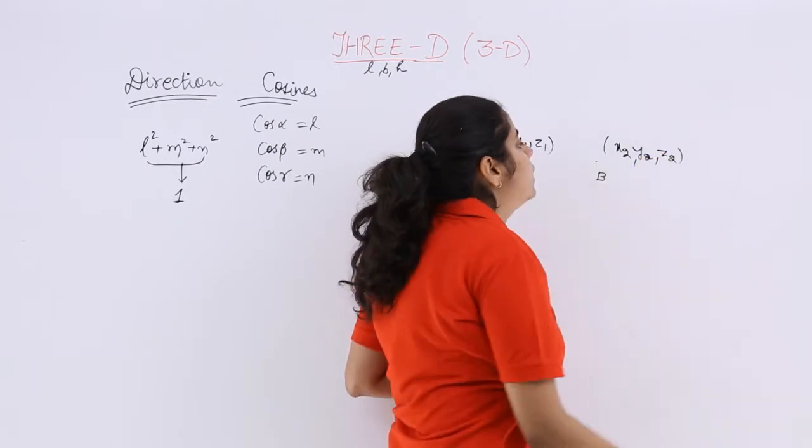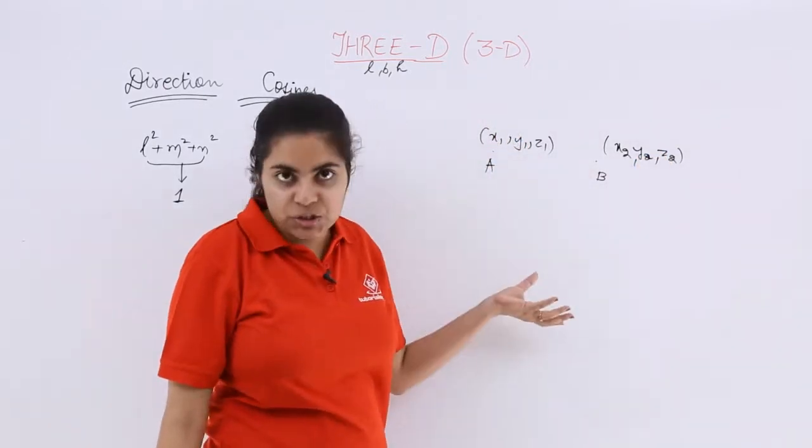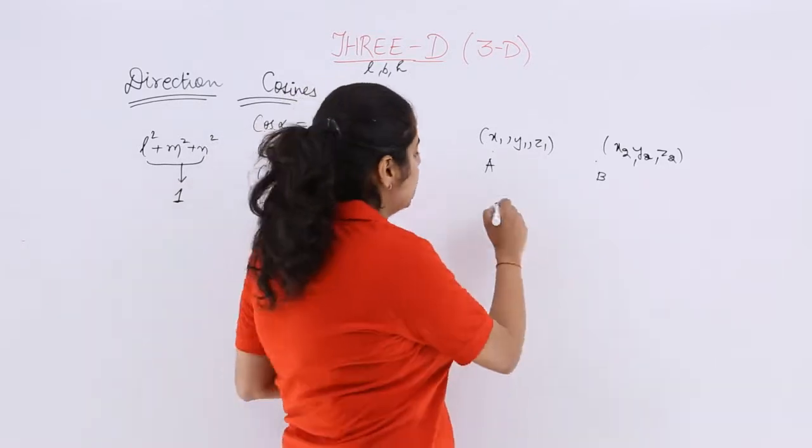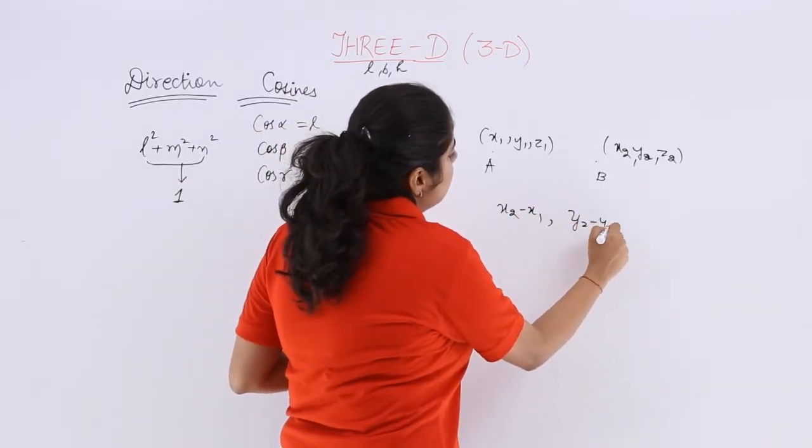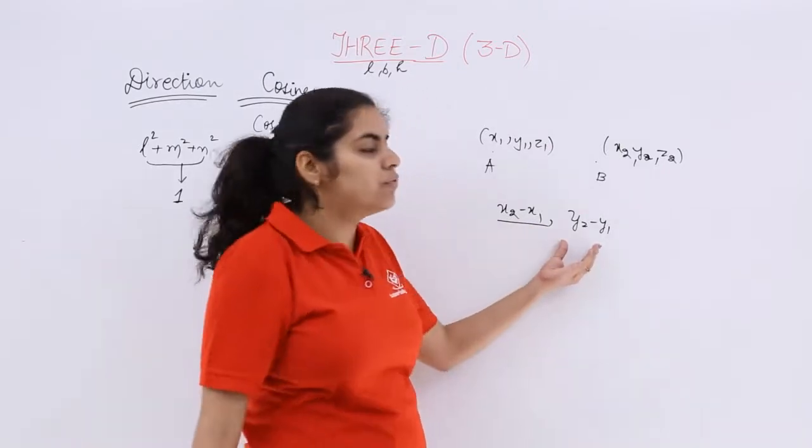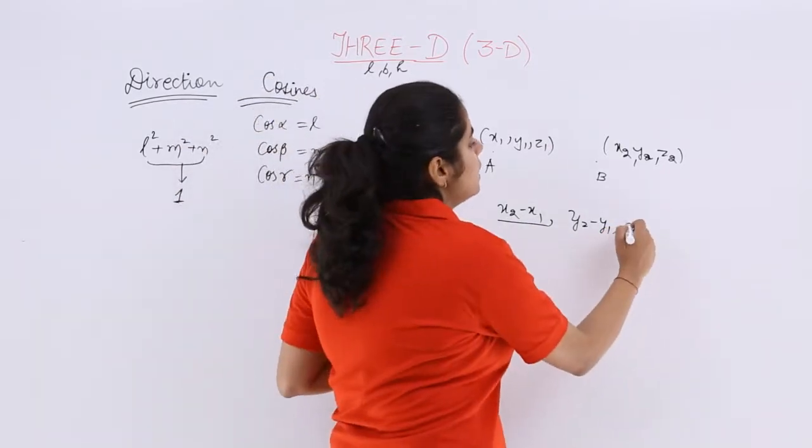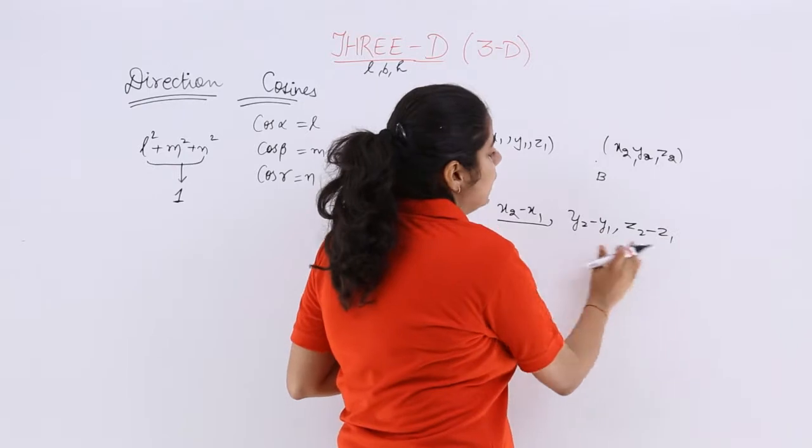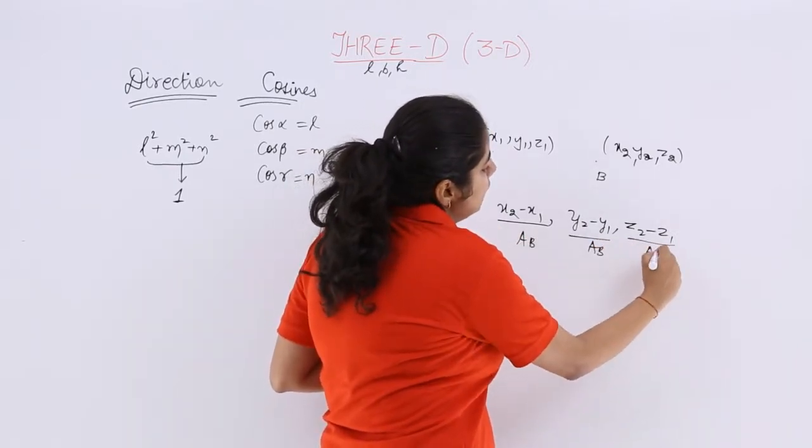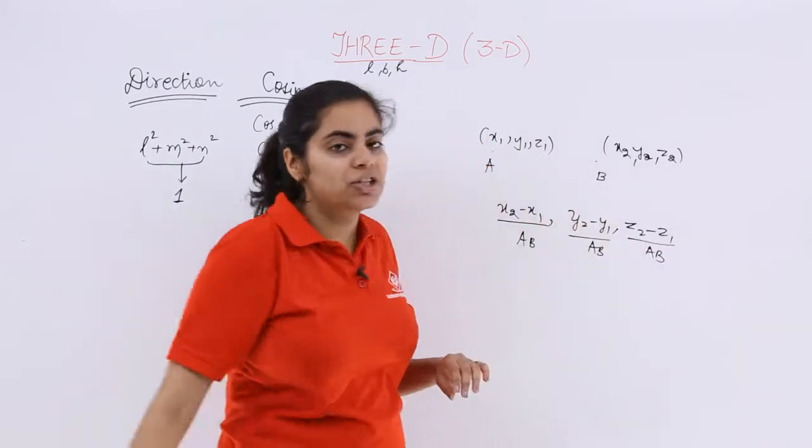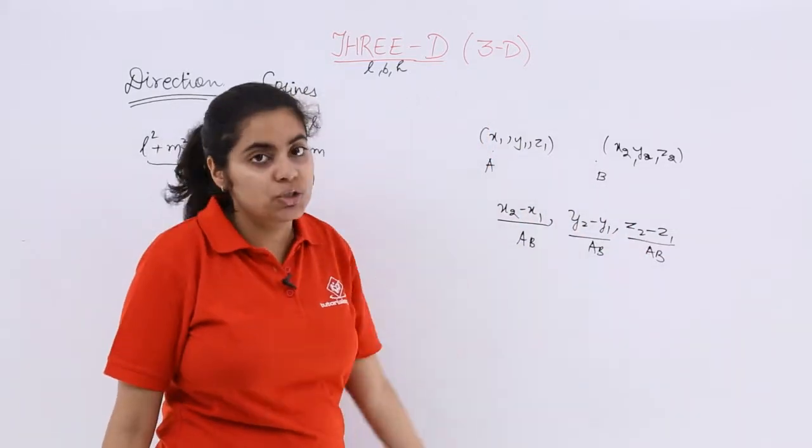Now you tell me what about the direction cosines of this line. So the direction cosines can be found out as x2 minus x1, y2 minus y1 but the only difference in these direction ratios which I am finding this way is that you divide by the magnitude. So basically the earlier ones were direction ratios but this is the direction cosines.